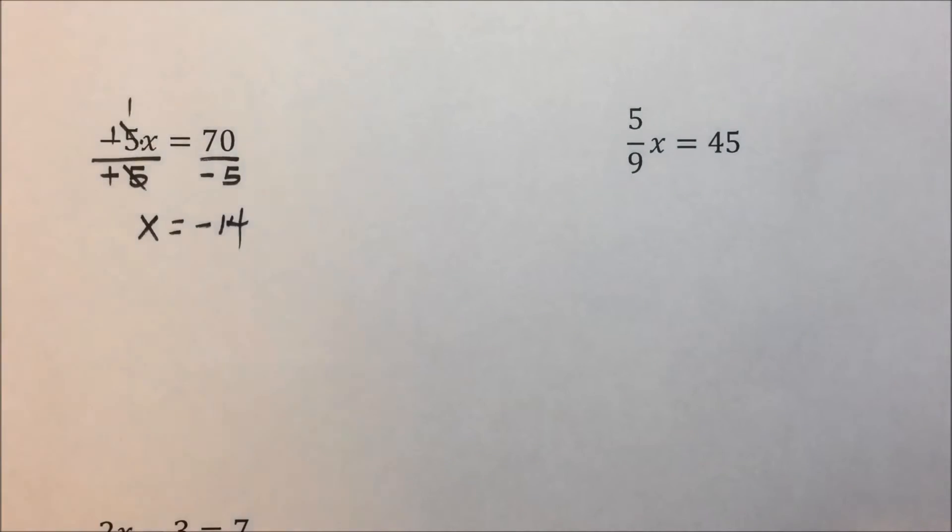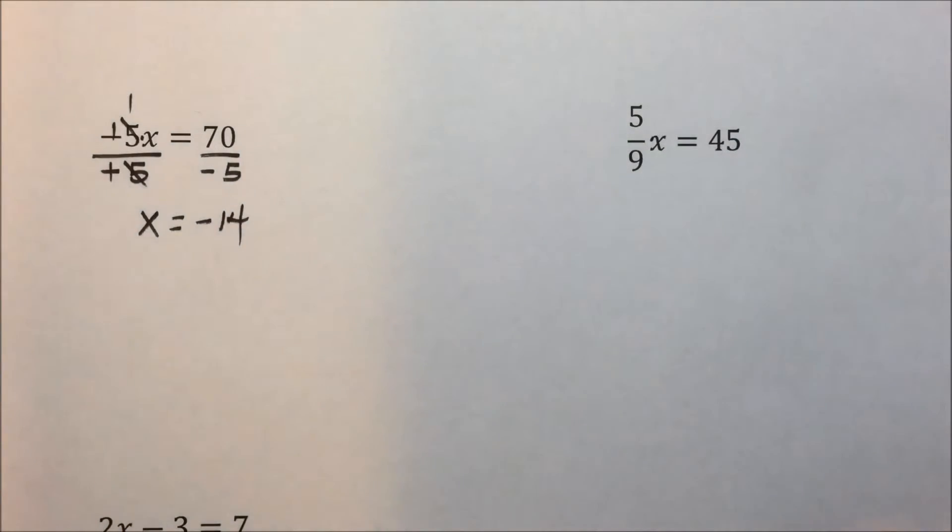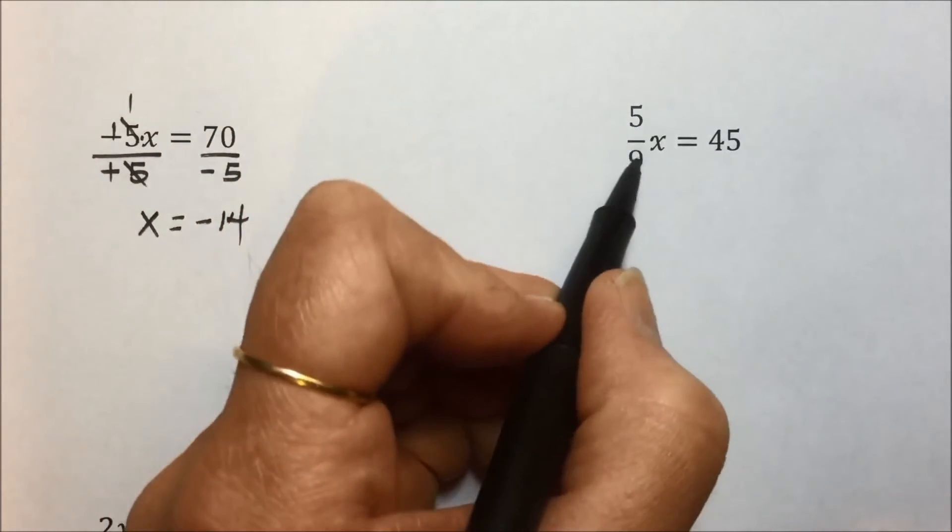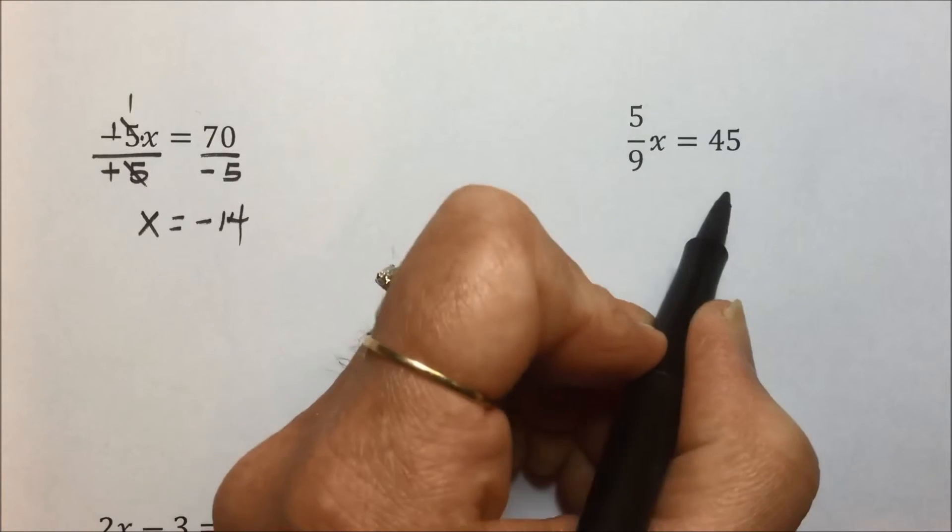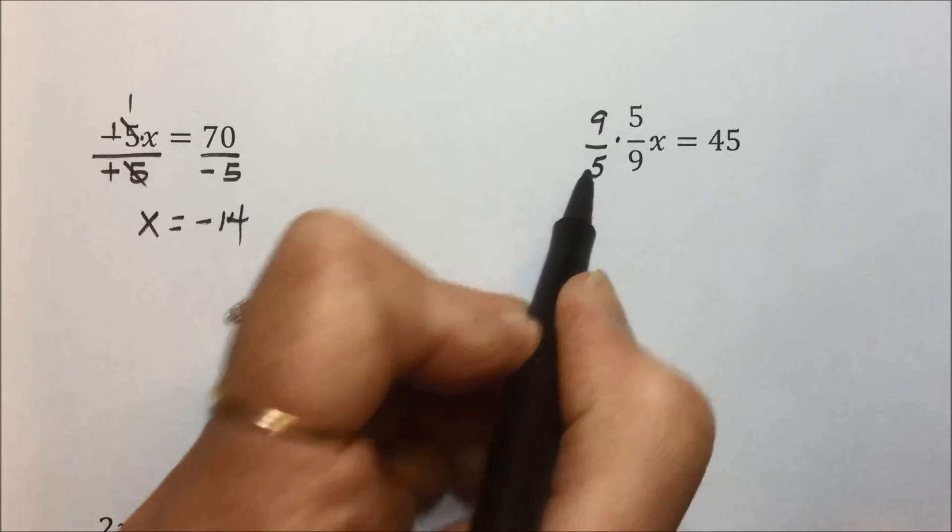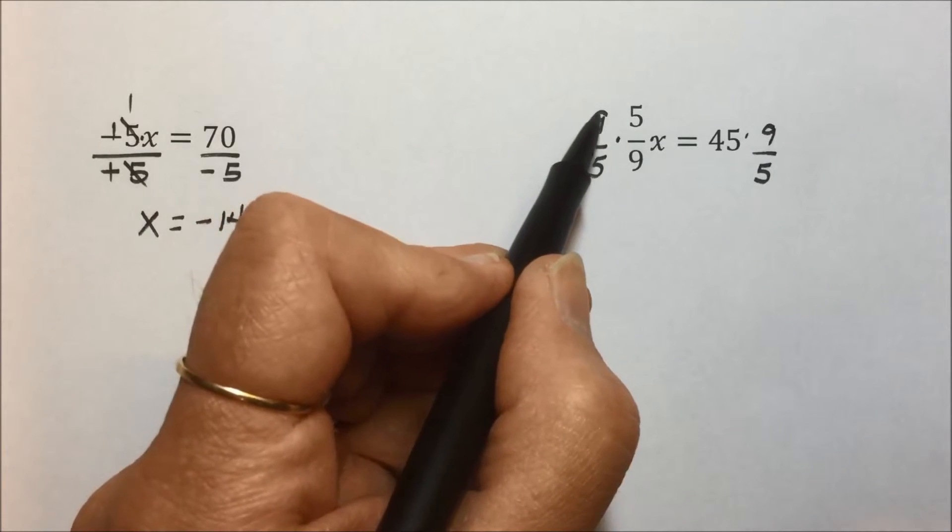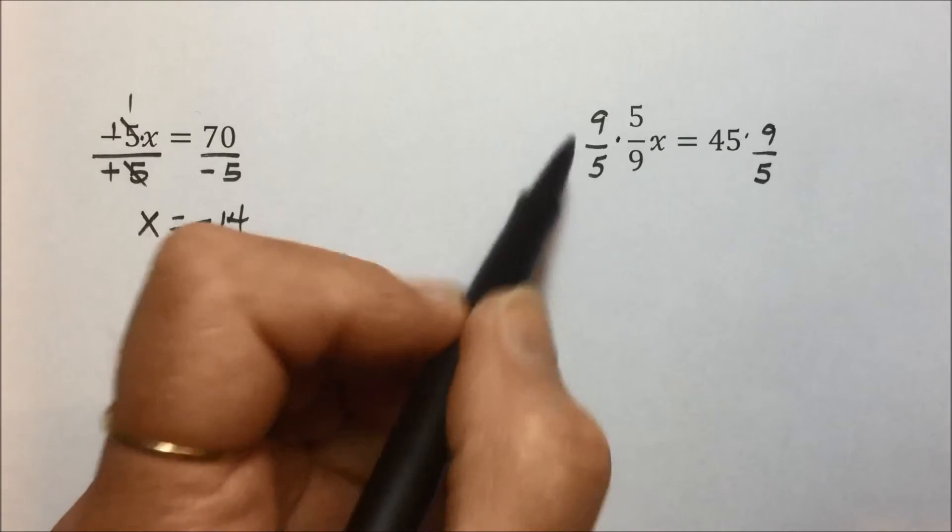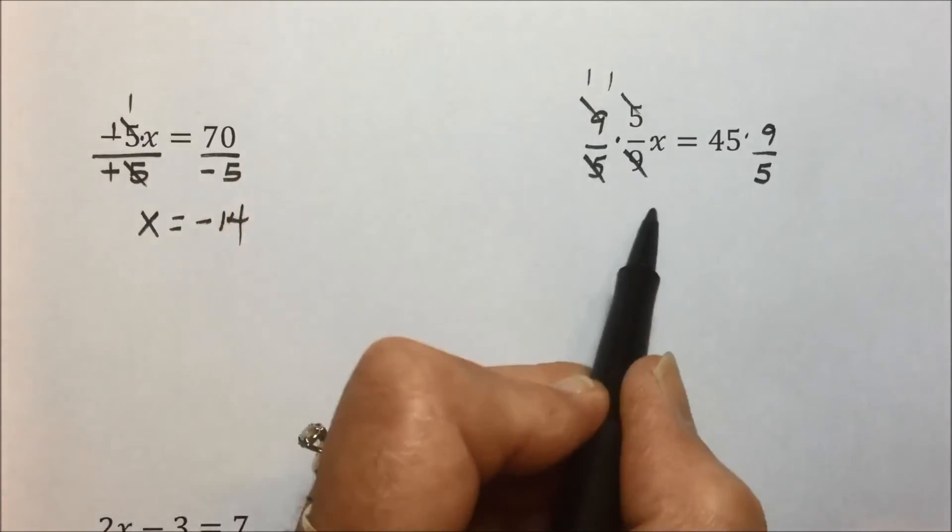In this next problem, we can solve this one of two ways. We can simply multiply by the reciprocal, and that might be the easiest in this case to eliminate. Normally a multiplication we divide, but that'll give us a complex fraction. Instead, consider multiplying by 9 fifths on both sides. 9 times 5 over 5 times 9 cancel out, or simply 9 divided by 9 is 1, 5 divided by 5 is 1, leaving an x.